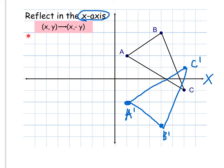You'll notice up here is the rule: when you reflect in the x-axis, you take an ordered pair (x, y) and it becomes (x, -y). As an example, if we look at point A, that's the ordered pair (1, 2). And A prime is the ordered pair (1, -2). The x is still the same — x is 1 in both — but y has become negative: here it was positive 2, and now it's negative 2.